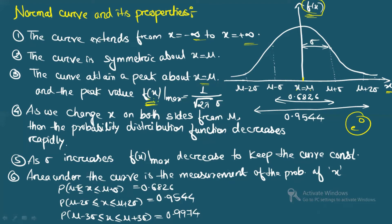When you change x on both sides of μ, the probability distribution function decreases rapidly. From the graph you can see that moving left or right from the mean causes f(x) to decrease rapidly. This is also a very important property of the normal curve.